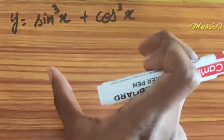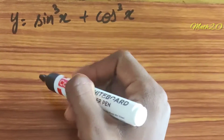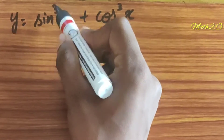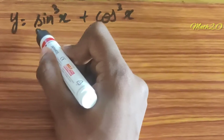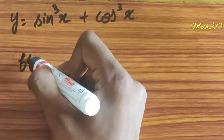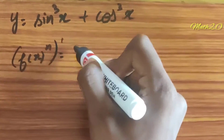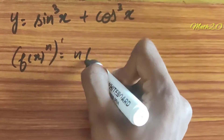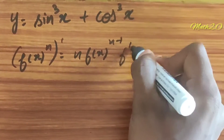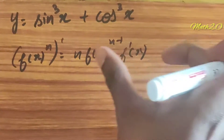So we have to differentiate here. In sin cube x, this function is the power n. Function power n — how do we differentiate here? It is n into that function power n minus 1, into the derivative of that function. So this is the function power n derivative.